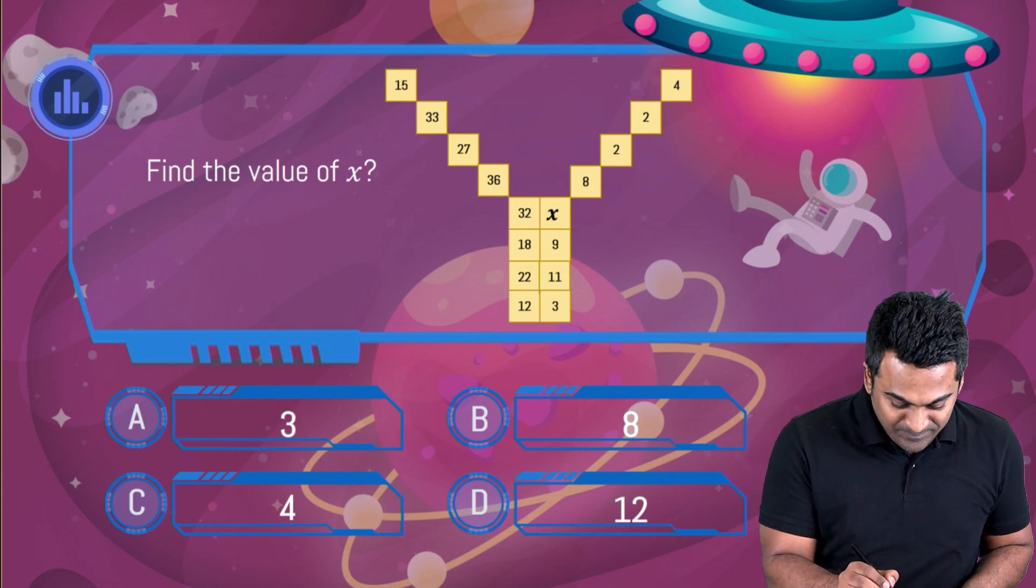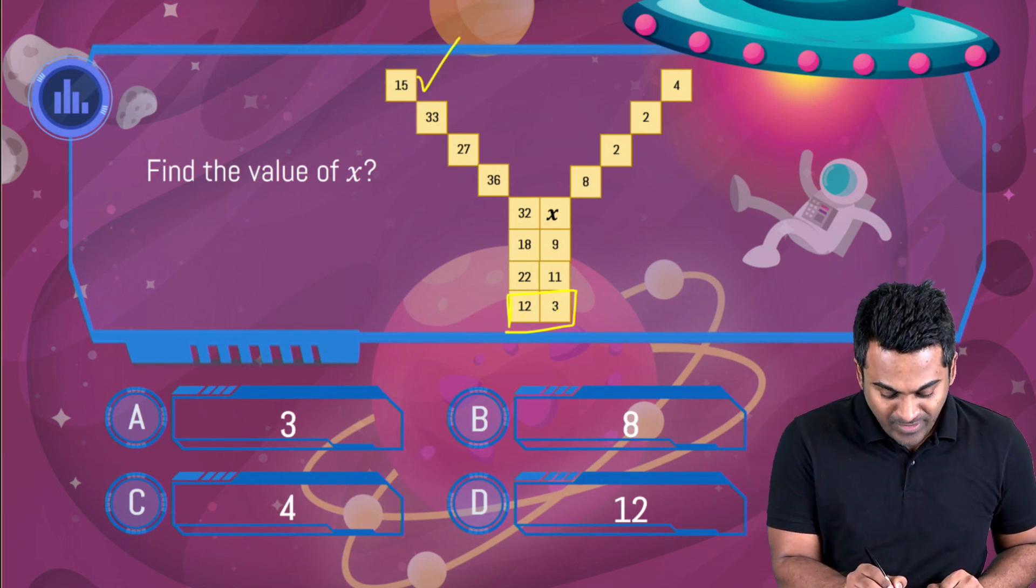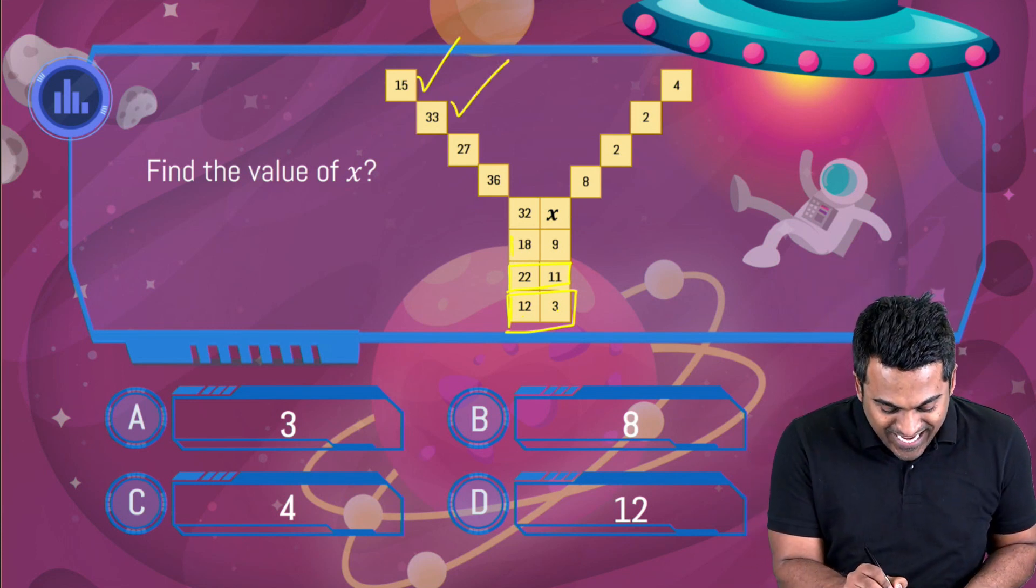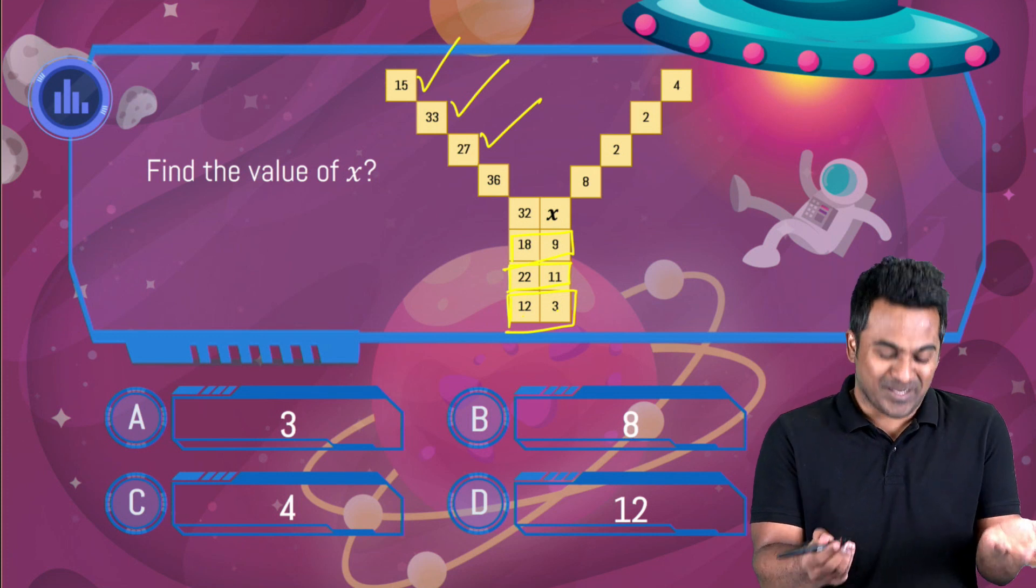So how do we do this? Well add these two numbers: 12 plus 3 you get 15, add 22 and 11 that's how you get 33, add 18 and 9 you get 27. And now comes the easy part: 32 added to x becomes 36.